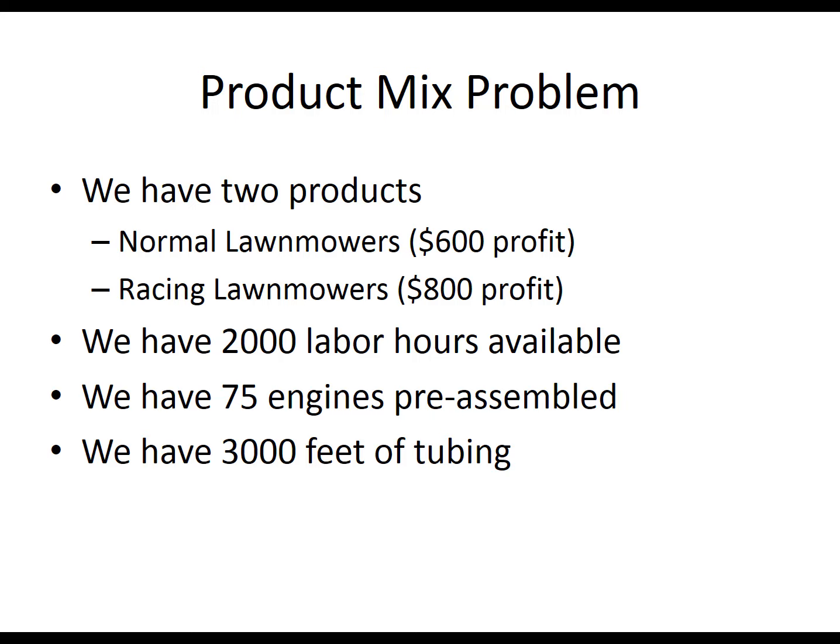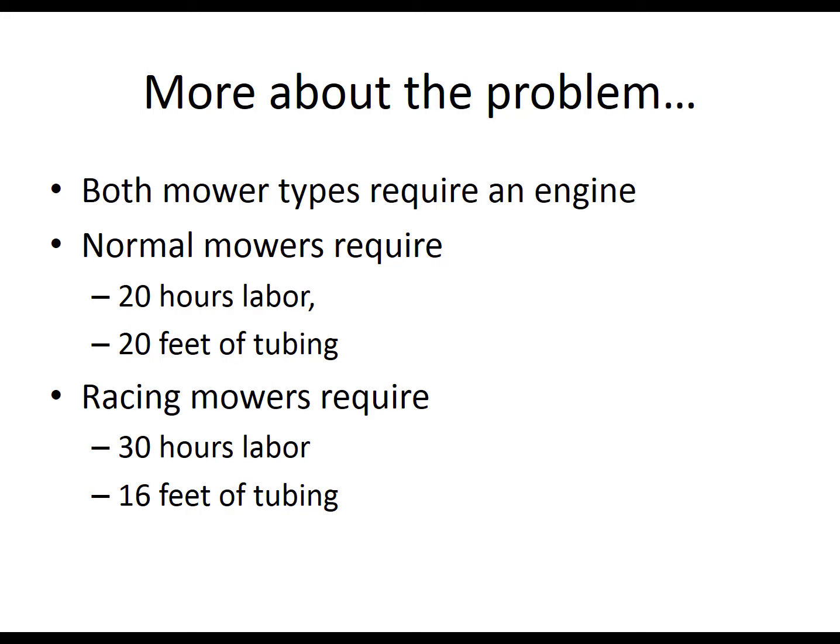This information is not enough for us to move forward to answer the questions we posed earlier. We need more information, such as how many labor hours, engines, and tubing each type of lawnmower would require to build. A lawnmower cannot work without an engine, so each lawnmower will need at least one engine to be completed. The normal lawnmower, along with an engine, will also require 20 labor hours and 20 feet of tubing, whereas the racing lawnmower would require 30 hours of labor and 16 feet of tubing to be completed.